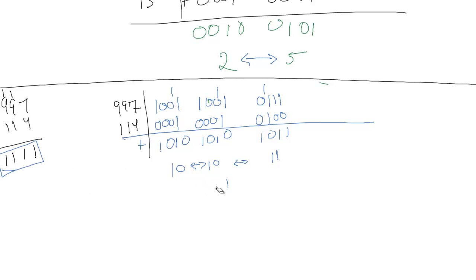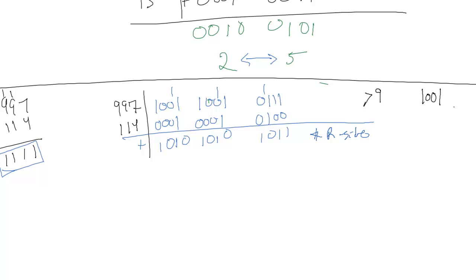So how do we combine these numbers? The solution is to first identify, starting on the right side, if we have an invalid BCD code. An invalid BCD code is any value greater than 9 — so anything after 1001 is invalid. Looking at our groups, 1010, 1011, and 1101 are all invalid BCD codes.